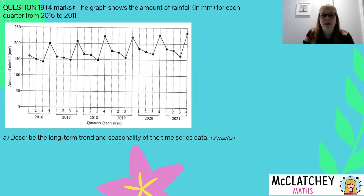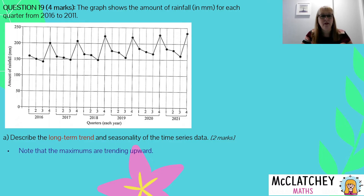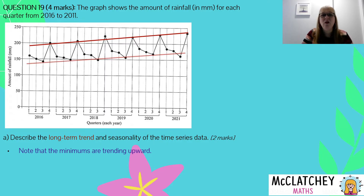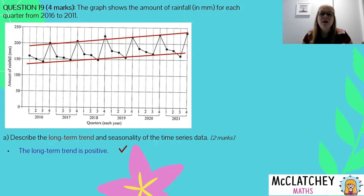The question says: describe the long-term trend and seasonality of the time series data — worth two marks. Describing the trend is one mark and describing the seasonality is the other. Firstly, the long-term trend: what is happening generally over the whole time series? Looking at the maxima — they are all trending upwards. Looking at the minima — they are also trending upwards. So our whole series is generally increasing. We could say the long-term trend is positive. Another way of saying this would be that the long-term trend is increasing, or growing — words that describe a positive trend.